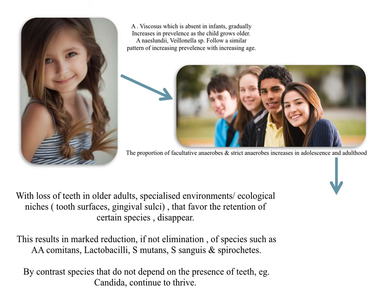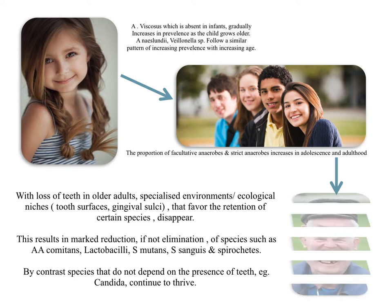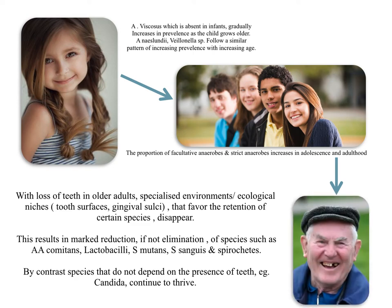Later, with the loss of teeth in older adults, specialized environments or ecological niches such as tooth surfaces and gingival sulci that favor the retention of certain species slowly disappear. This results in marked reduction, if not elimination, of species such as A. actinomycetemcomitans, lactobacilli, S. mutans, S. sanguius, and spirochetes. By contrast, species that do not depend on the presence of teeth, such as Candida, continue to thrive.